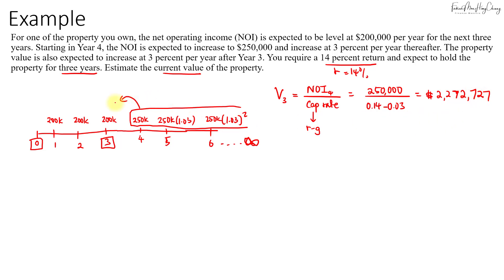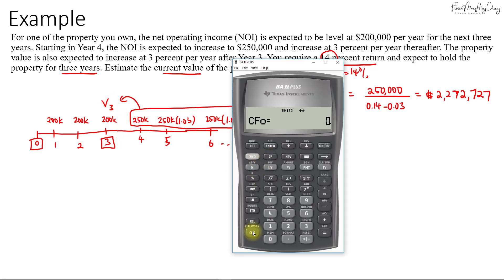This amount will be at year three. After that, we need to discount all this back at 14% return. We have the terminal value here at V3. Now cash flow worksheet: C01, which is year one, we have $200,000, and the frequency is 2 for up to year two.